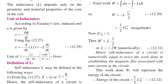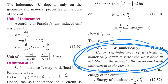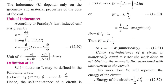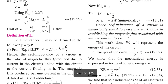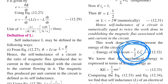Hence, self inductance of a circuit is numerically equal to twice the work done in establishing the magnetic flux associated with the unit current in the circuit. The work done W represents the energy of the circuit, given by the energy formula: Energy = ½LI².